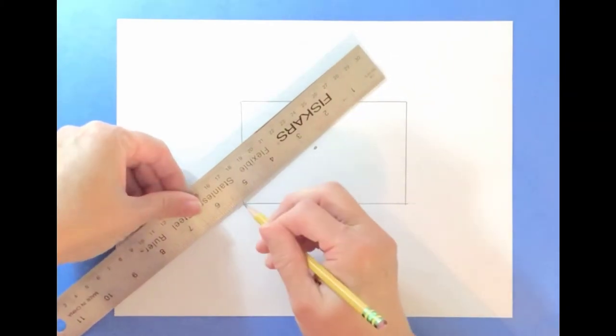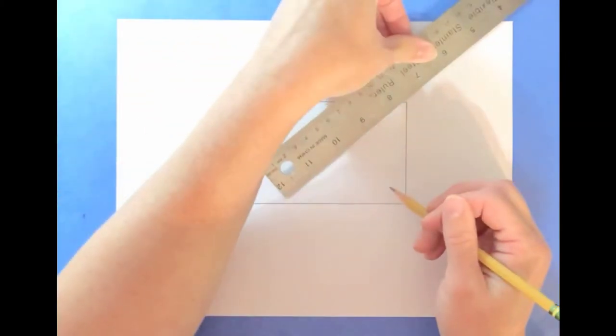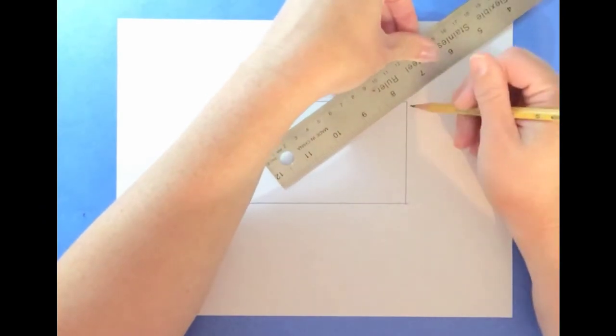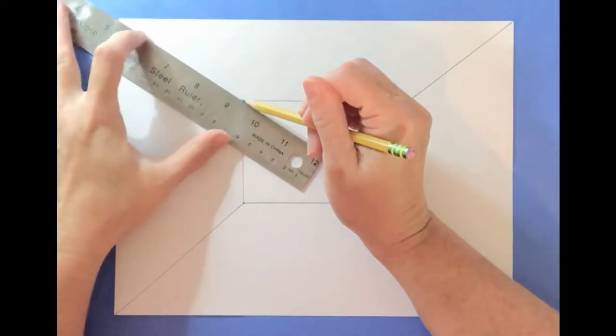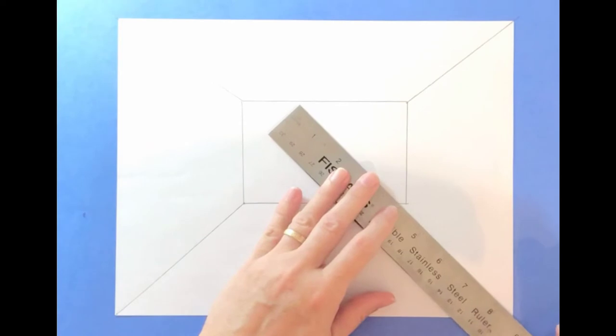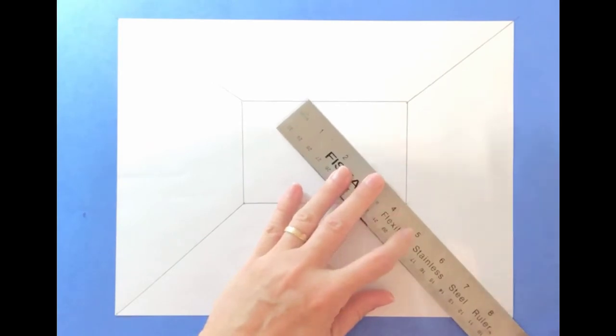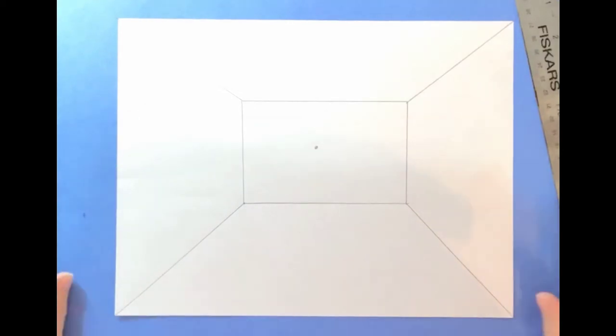Then I'm going to take the corner of that rectangle or square and that's going to go to the outside corners. All right, so now we have the beginnings of our room. We still need that vanishing point, so don't erase it.